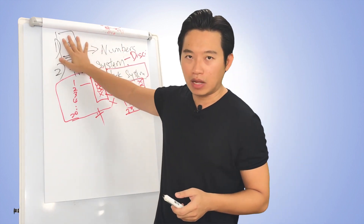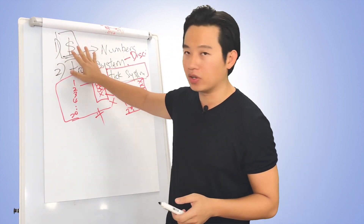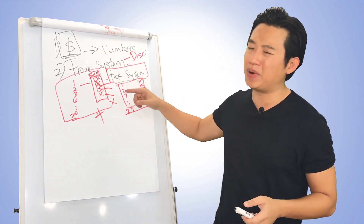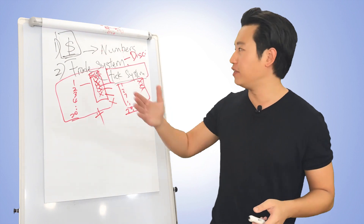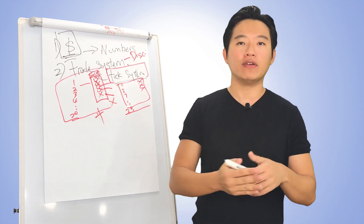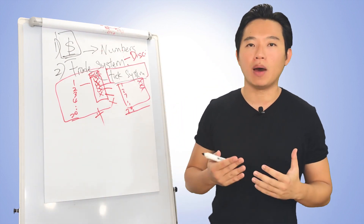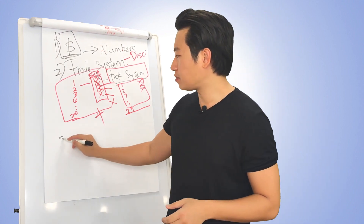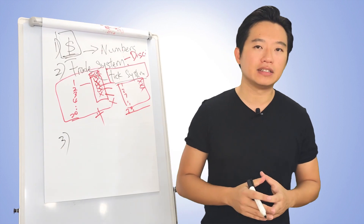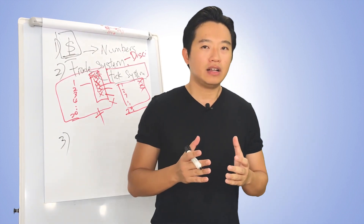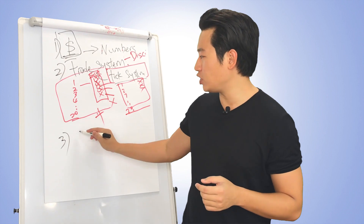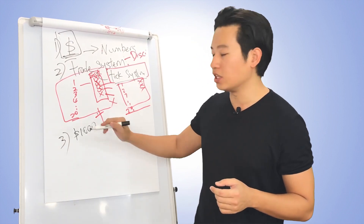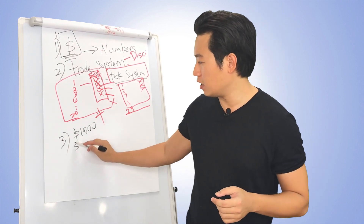So coming to recap — last week we talked about how to manage money, where you've got to think about it as numbers, and how to have a proper system in place. This is extremely important because if we don't have this, we are trading without discipline and without a proper system in place.